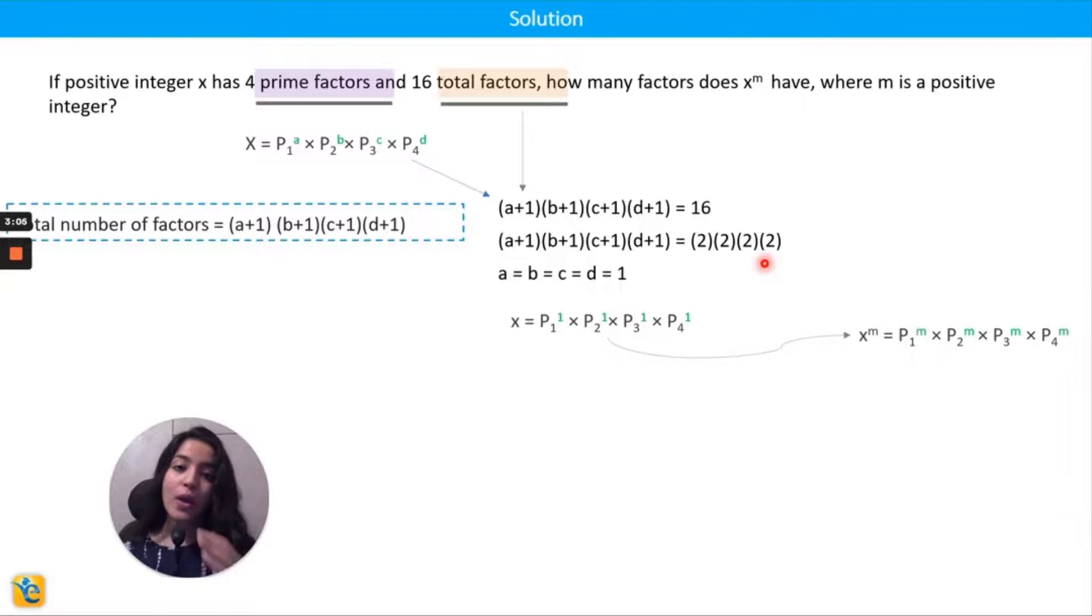Now from this I can get x to the power m. All I have to do is raise both sides to the power m, and when you do that in exponents, the powers get multiplied. So here when a 1 gets multiplied by m, you get m only, and so all of these become m.